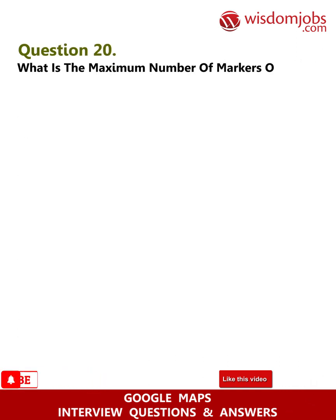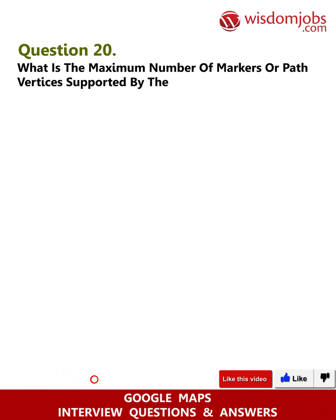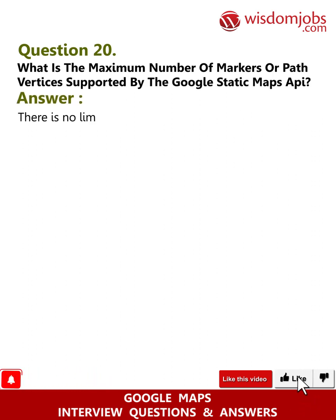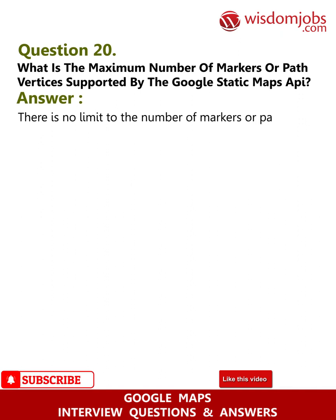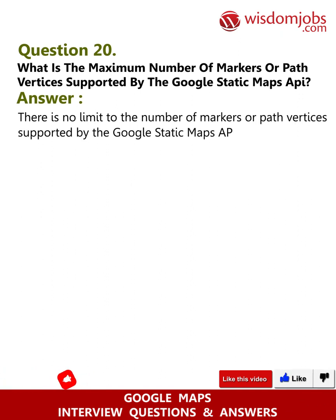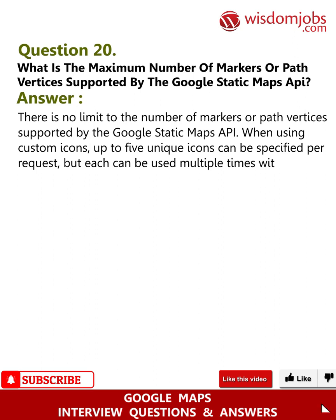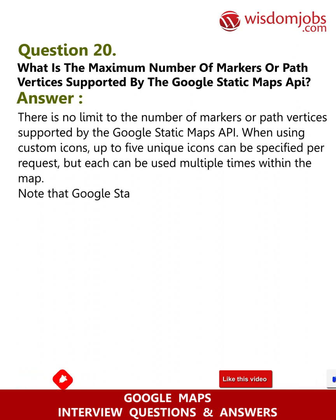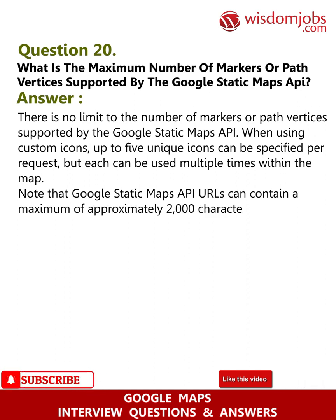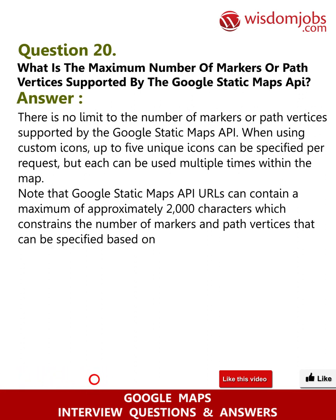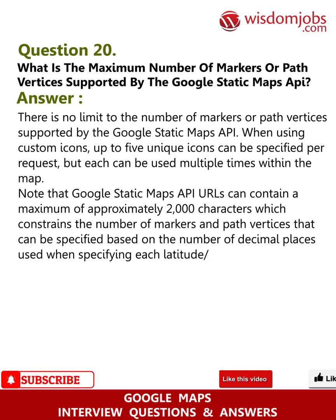Question 20: What is the maximum number of markers or path vertices supported by the Google Static Maps API? Answer: There is no limit to the number of markers or path vertices supported by the Google Static Maps API. When using custom icons, up to five unique icons can be specified per request, but each can be used multiple times within the map. Note that Google Static Maps API URLs can contain a maximum of approximately 2,000 characters, which constrains the number of markers and path vertices that can be specified, based on the number of decimal places used when specifying each latitude/longitude.